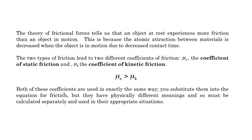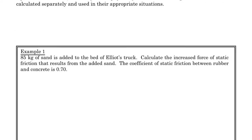These coefficients are used in exactly the same way — you substitute them into the equation for friction — but they have physically different meanings. So they have to be calculated separately, and you need to be careful which one applies. Mu is a Greek letter, and it is the coefficient of friction.